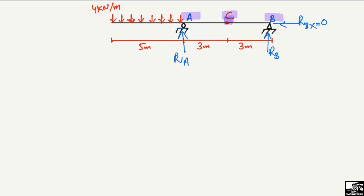Now, point C is where we will find out the normal force, shear force, and bending moment. Starting with the support reactions — let's take the summation of moments at point A equal to zero. Let's suppose clockwise moment is taken as positive and anti-clockwise moment is taken as negative. The force that creates a moment about point A is the distributed load, which is 4 kN/m distributed over a length of 5 meters.